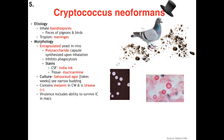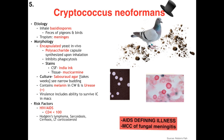His virulence includes the ability to survive inside macrophages. The risk factor is one and only: HIV/AIDS with CD4 T-cell counts dropping below 100. For completeness, patients with Hodgkin's lymphoma, sarcoidosis, cirrhosis, or long-term corticosteroid use are technically at risk, but the CD4 T-cell count still needs to be below 100. This is our third and last AIDS-defining illness, and it is the most common cause of fungal meningitis.